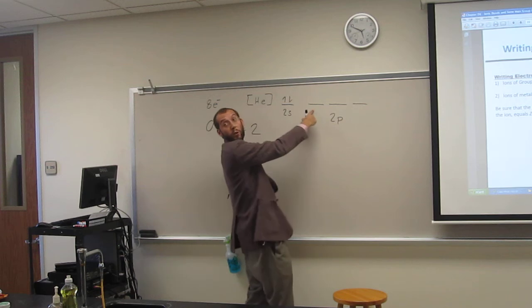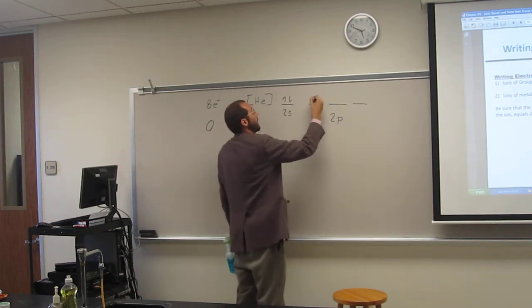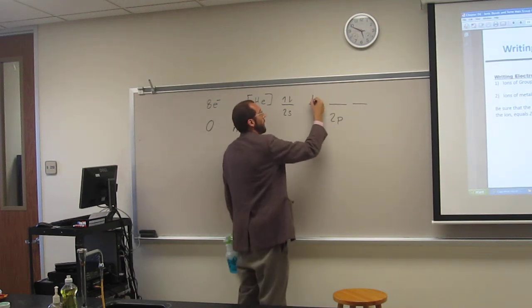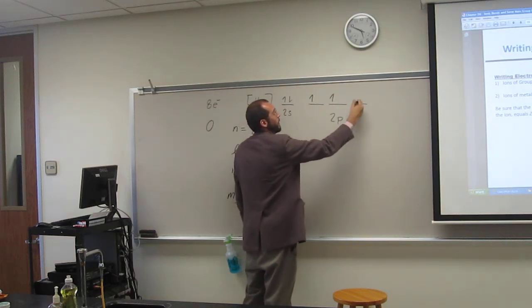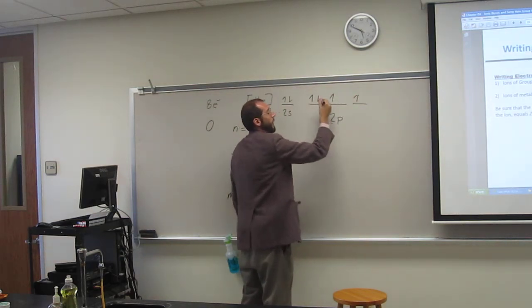So oxygen needs four electrons, right? So where are we going to put the first one? Right here. And the second one? Next one. Next one, right? And this one? Yeah. And then the second, right?